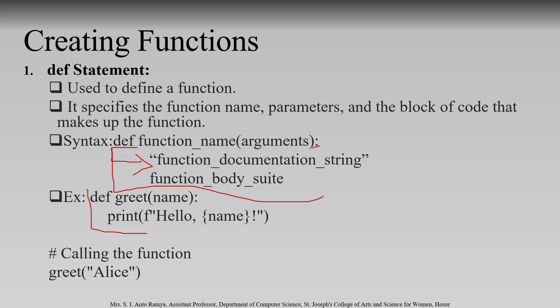The function cannot execute alone, so we need to call the function. In other programming languages there is a main function from where all other functions are linked. In Python there is no specific main function, but we also have to call the function from somewhere — outside the function. Here the function name is 'greet', so we call 'greet("Alice")'. 'Alice' is the value passed to the parameter 'name'. Inside the print statement, 'hello' is given in double quotes, and then 'name' — the parameter — will be substituted with 'Alice'. So 'Hello Alice' will be printed.